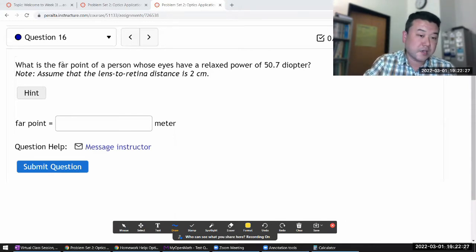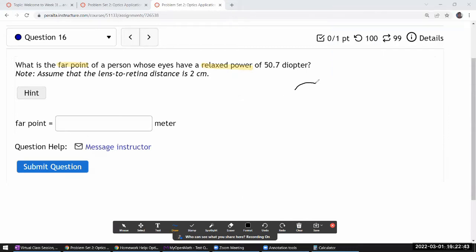It's asking about far point, telling you about relaxed power. So you should have this image of the eye in mind. If this is our eye, imagine there's a kind of a lens in the front of the eye and imagine there's a screen where a real image forms due to this lens of the eye. And you have some kind of object, some distance away.